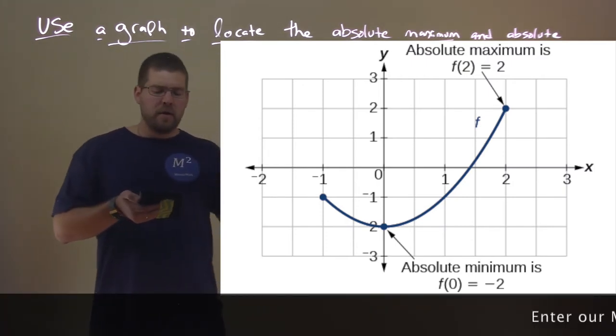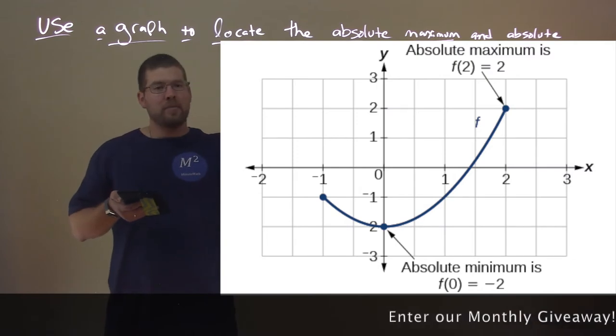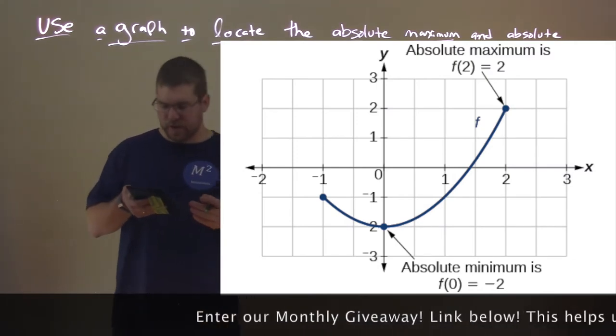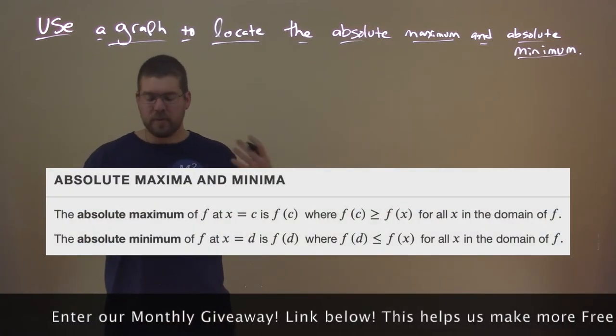So, again, we can only have a maximum of one absolute max and only one absolute minimum. Alright, so let's go with the definition here.